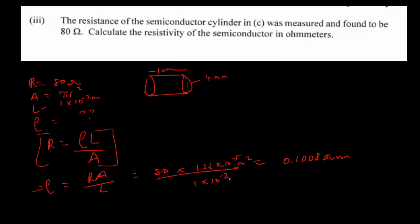At the end of the day we get a resistivity of 0.108 ohm-metres. You can verify the units by keeping track of the specific units for each quantity, and you'll find they cancel to leave ohm-metres. This is what you're supposed to get for this particular question. Feel free to ask if you have any questions — this completes that part.